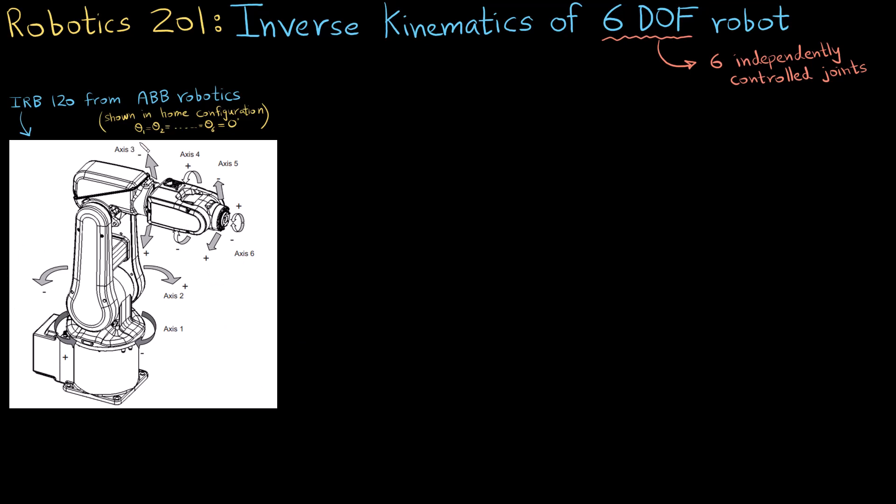From where I got the picture it also said that the robot that is currently shown is in home configuration which means that all the joint angles are 0. So we can see that there are 6 joints, let me mark them out.